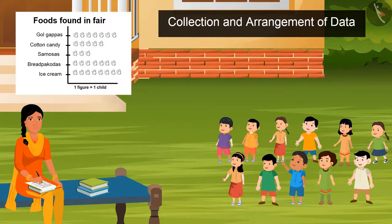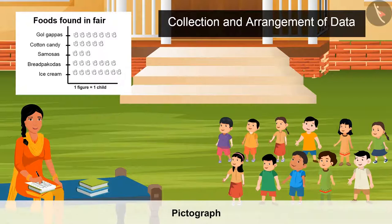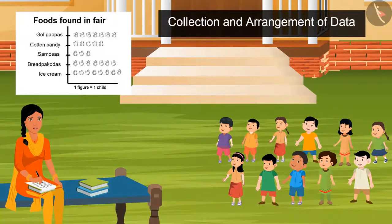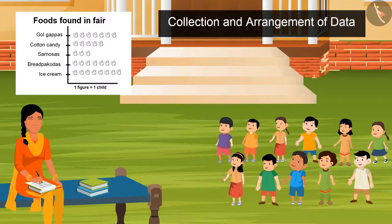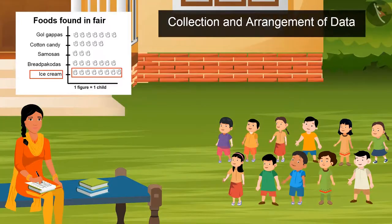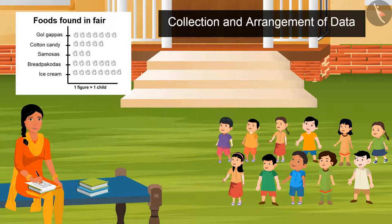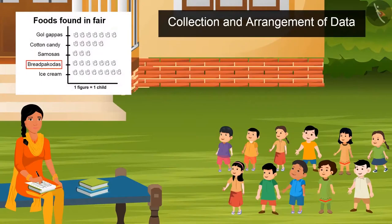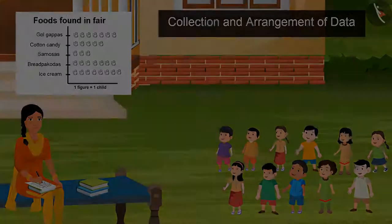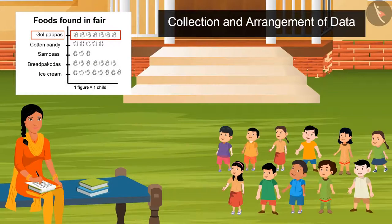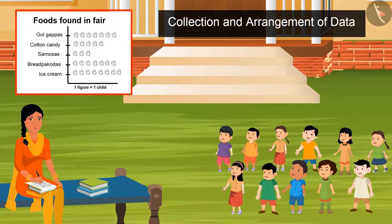Sister, what have you made? Look, this is known as a pictograph. In this, with the help of pictures, I have shown the number of kids with their choices of food. By closely looking at this pictograph, tell me which food is highly chosen by the kids. Ice cream! Absolutely right. Now tell me what should we buy more — samosas or bread pakoras? Bread pakoras! Right. Now tell me how many kids love gol gappas? 7. Very good. So kids, a pictograph is also a very good way to represent data in an organized manner.